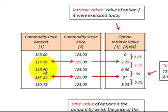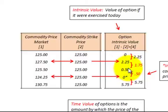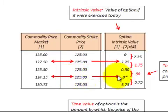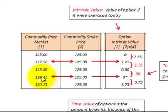In the next period, the market price is $125.50 versus the strike price, giving a difference of $0.50. The change between periods is a negative $1.75 — the $2.25 minus $0.50. In the following period, the market price is $124.25 versus the strike price of $125. Here we record zero for intrinsic value because you can buy the commodity at a lesser price than the strike price, and the intrinsic value can never be negative.